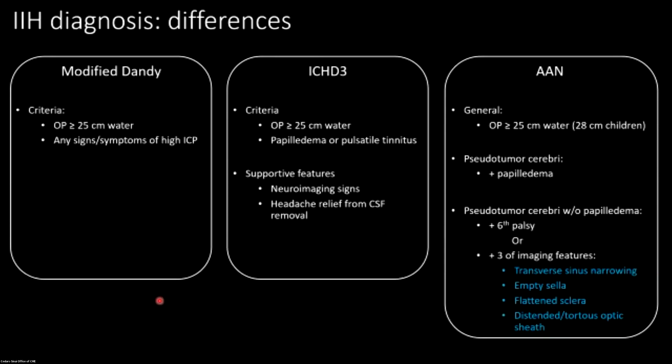Of course you have to read through all of the ICHD-3 like legal code — notwithstanding criteria 7 and 8, not better explained by — there are a lot of triple negatives, but that's what you wring out. The AAN criteria require an opening pressure greater than 25 centimeters of water and kindly include children, recognizing that people under 18 often have higher opening pressures, so 28 and above is where it becomes abnormal.